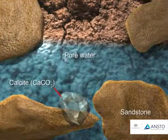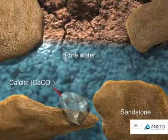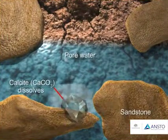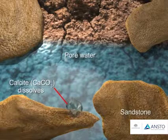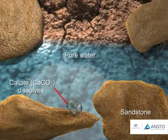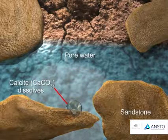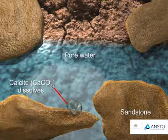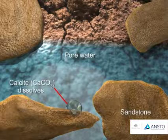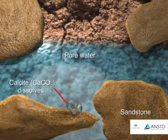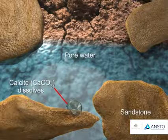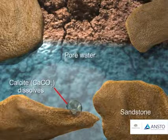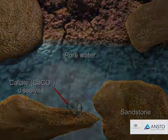As water interacts with the minerals in the rocks, in some cases it can dissolve minerals that contain dead carbon, meaning carbon that does not contain carbon-14. These types of processes dilute the original carbon-14 concentrations and have to be accounted for in order to obtain a reliable groundwater age.